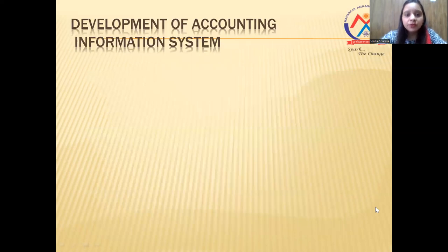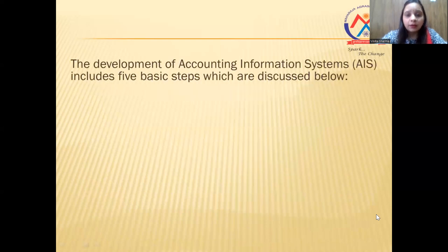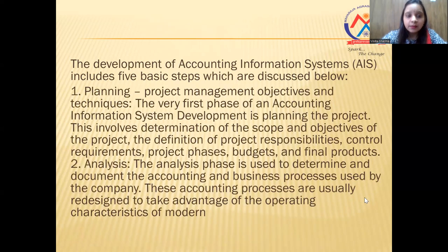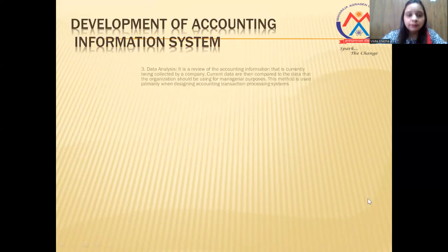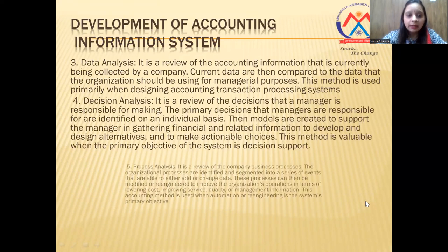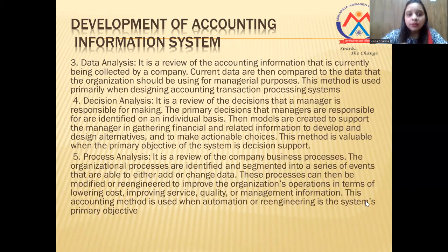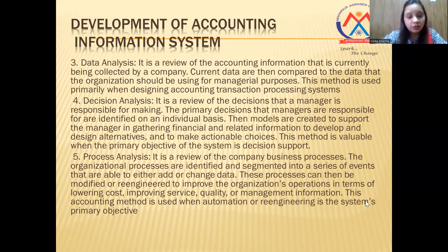The development of accounting information system — how we can develop AIS. To develop AIS, we need five basic steps: planning, analysis, data analysis, decision analysis, and process analysis. Process analysis is a review of the company's business processes — the organization's processes are identified and segmented into a series of events. These processes can then be modified or re-engineered to improve the organization's operations. This accounting method is used when automation or re-engineering the system is the primary objective.